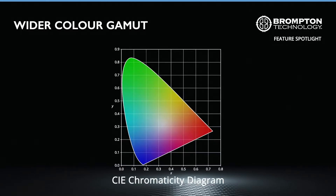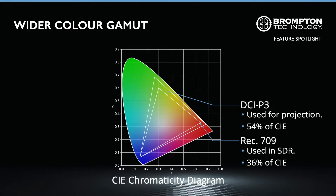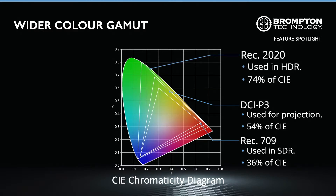The CIE colour space describes all the colours within the visible spectrum for humans. SDR typically uses the REC 709 colour space, which covers as little as 36% of this CIE. For movie projection, the slightly wider colour gamut of the DCI-P3 colour space is typically favoured, offering improved coverage at 54% of the CIE. By contrast, HDR is commonly created using the REC 2020 colour space, which covers 74% of the CIE, thus offering a much wider colour gamut.